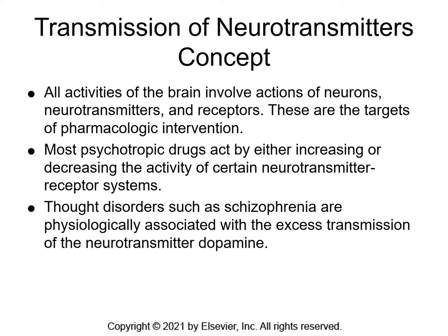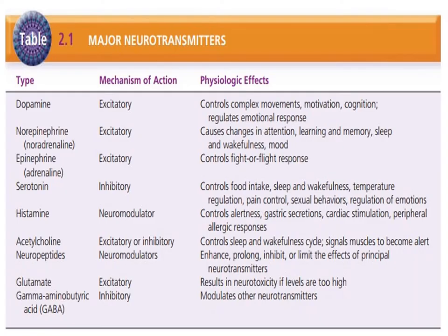Thought disorders such as schizophrenia are physiologically associated with excess transmission of the neurotransmitter dopamine. Dopamine is an excitatory neurotransmitter that controls complex movements, motivation, cognition, and helps regulate emotional responses. It comes from tyrosine, an amino acid in our diet. We see changes in dopamine levels in schizophrenia, psychosis, and Parkinson's. Antipsychotic medications help block dopamine receptors and reduce dopamine activity.